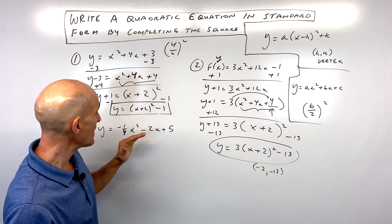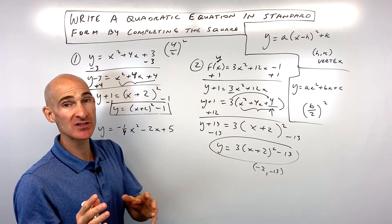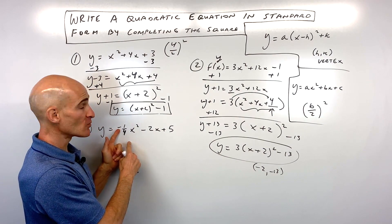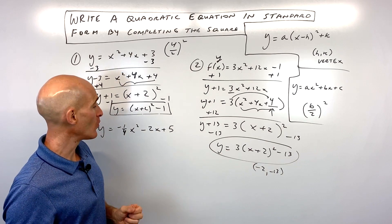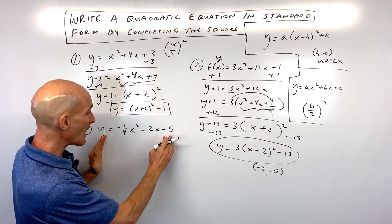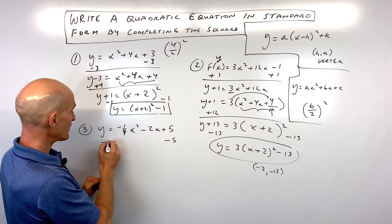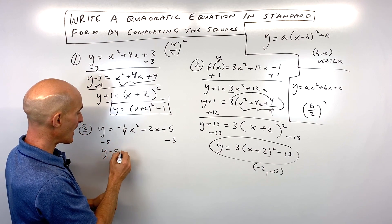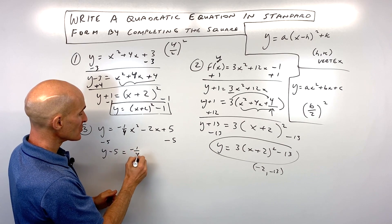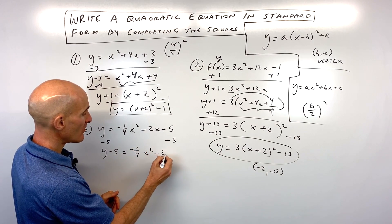See if you can do this one. This is probably the most challenging example because it involves a fraction as well as a negative. Okay, so what would you do on this one? What I'm going to do here is I'm going to subtract 5 like I normally do, okay, just to get the constant out of the way on the other side of the equation. So now we have negative 1/4 x squared minus 2x.